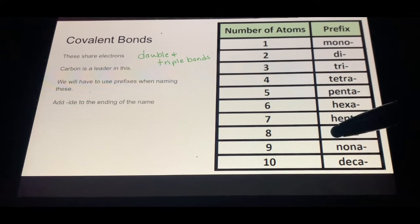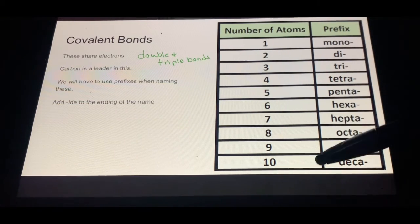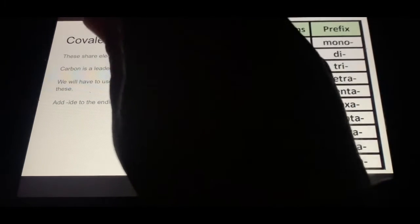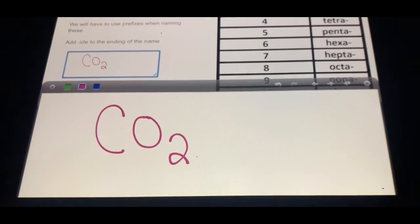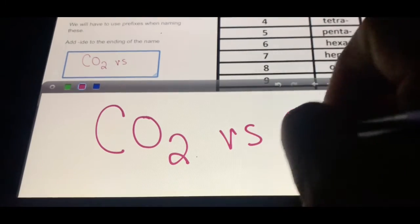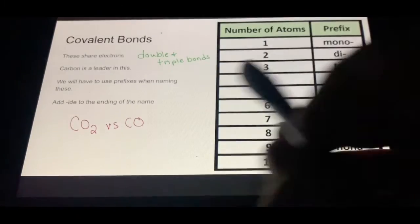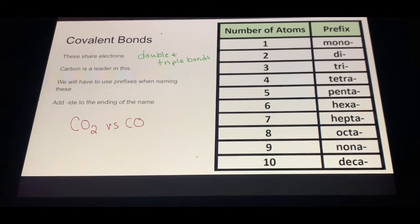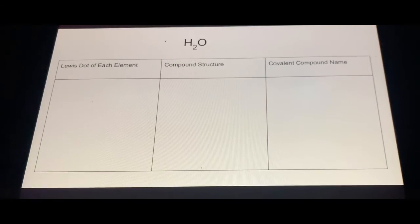I'm going to start you off with binary compounds first. With binary, we always add an IDE ending to the end of the name. You've been doing this for years, you just didn't know what the rules were. For instance, CO2, you know it as carbon dioxide. And CO, carbon monoxide. You've already been doing this, so don't overthink this. You've totally got this.